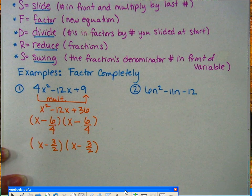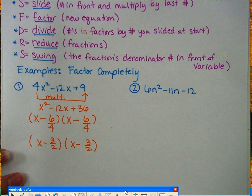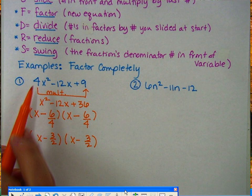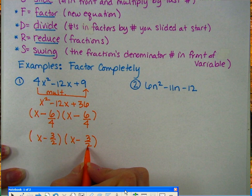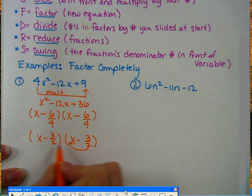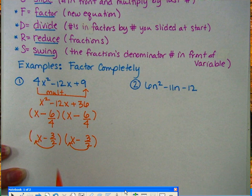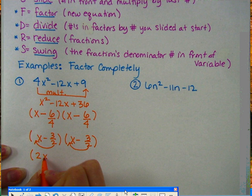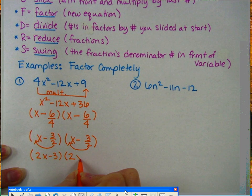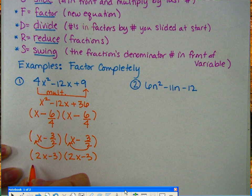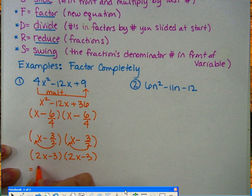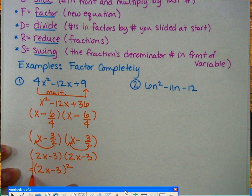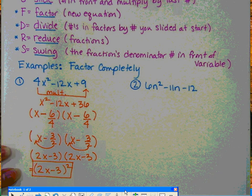And we're still not done because we don't want to leave our numbers as fractions because originally, if you look, if you were to multiply this out, it would not give you the original problem. So the x stands for swing, you take these numbers that are in your denominator and you swing them in front of whatever your variable, and in this case it's x. So this then becomes 2x - 3 times 2x - 3. And this can also be written as (2x - 3)². So this right here is your completely factored solution.